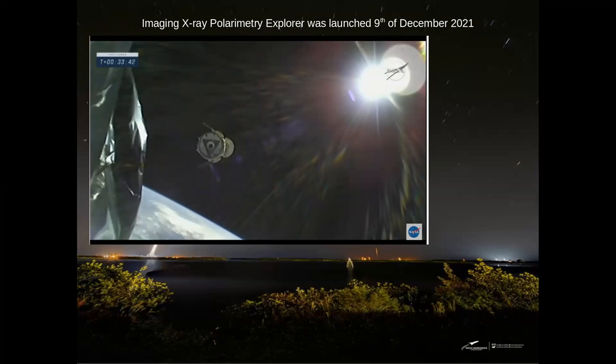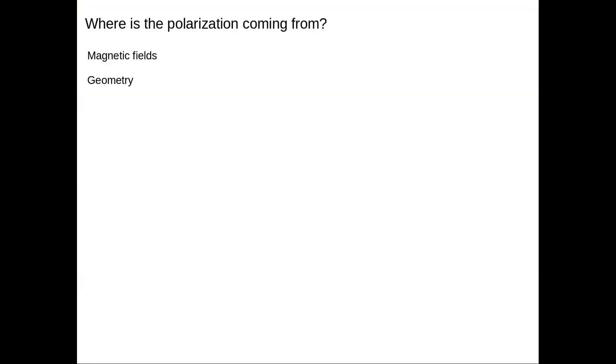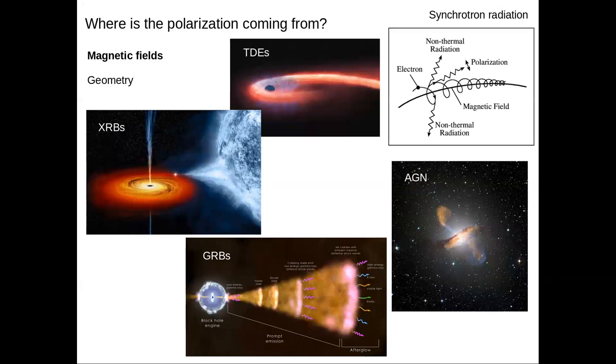You might be wondering why do we even bother with X-ray polarization or polarization in general. The reason is that the universe is much more polarized than you might think. There are many ways that we can create polarization. You can group them into two broad categories. One is you can have magnetic fields. For that, we have what's called non-thermal processes, and the most common is synchrotron radiation. Basically magnetic fields give a preferred direction of emission and that gives rise to polarized light.